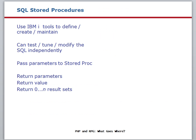One way to get the raw SQL off the page is to create SQL stored procedures. You can use IBM i Tools to define, create, and maintain an SQL stored procedure. A big advantage of moving the SQL out of the PHP and into a stored procedure is that you can test, tune, and modify the SQL independently of the PHP code. You can pass parameters to a stored procedure. On the IBM i, SQL stored procedures are ILE C programs that are called, so the number of parameters that you can pass is in the hundreds. You can get values back from a stored procedure as return parameters. A stored procedure can also return a value, usually used to indicate the success or failure of the call. Most importantly, for use within a PHP application, an SQL stored procedure can return one or more result sets. The result sets contain the data that you want for your application.